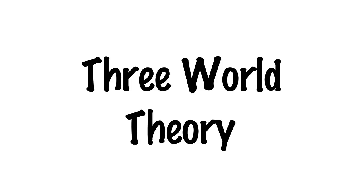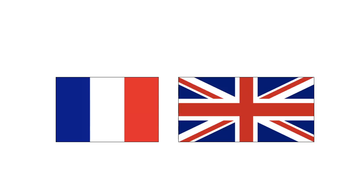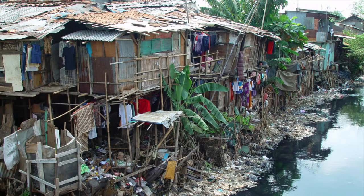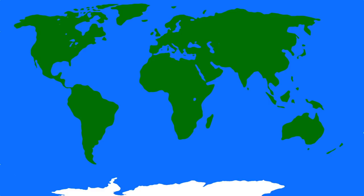All of these worlds we've been talking about are under the three world model. The confusion only gets more confusing when you introduce the three world theory. The three world theory was introduced by Mao Zedong, the Chinese revolutionary. It describes the first world as superpowers, the second world as lesser powers, and the third world as exploited nations. Although this might seem to better describe the three world model we use today, the two systems have nothing to do with each other.